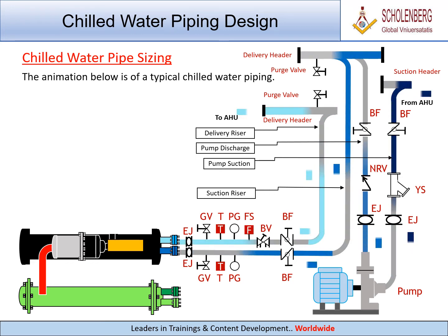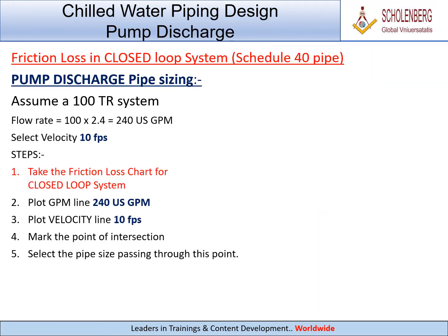The animation below is of a typical chilled water piping. Friction loss in a closed loop system, schedule 40 pipe — pump discharge pipe sizing. Assume a 100 TR system.